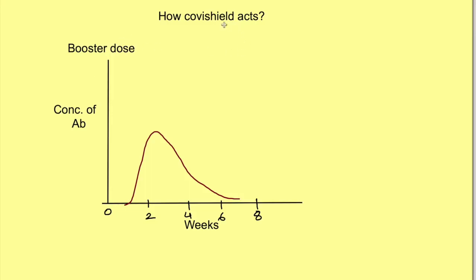Generally, multiple doses of vaccines are required. In case of Covishield, the second dose is required around 8 to 12 weeks after the first dose. With the first dose, if you see this graph where the x-axis shows time in weeks and the y-axis shows concentration of antibodies — the response starts after almost one week, the concentration of antibodies released by B cells increases, and then it starts coming down around four to six weeks.